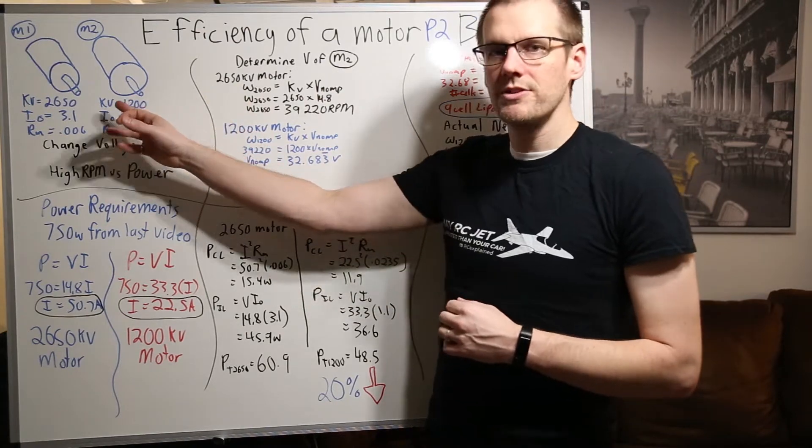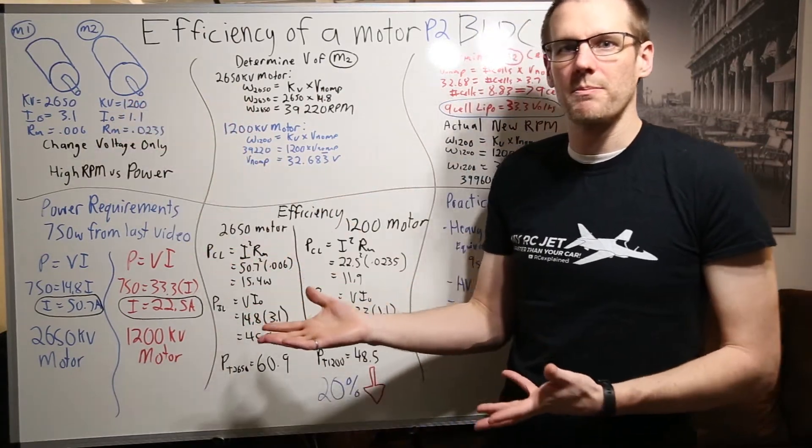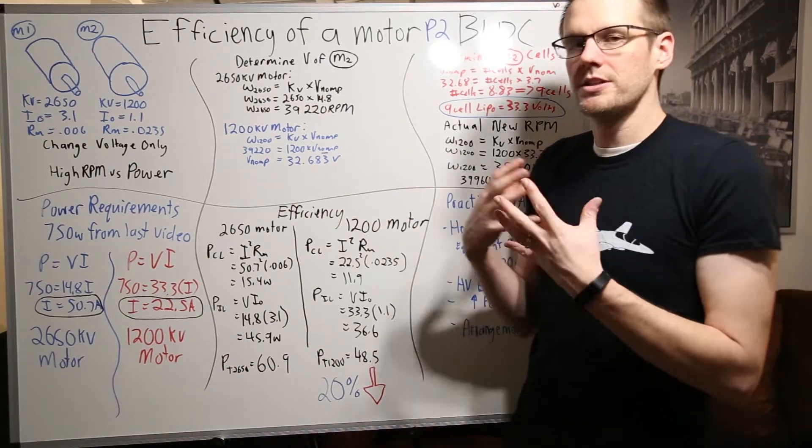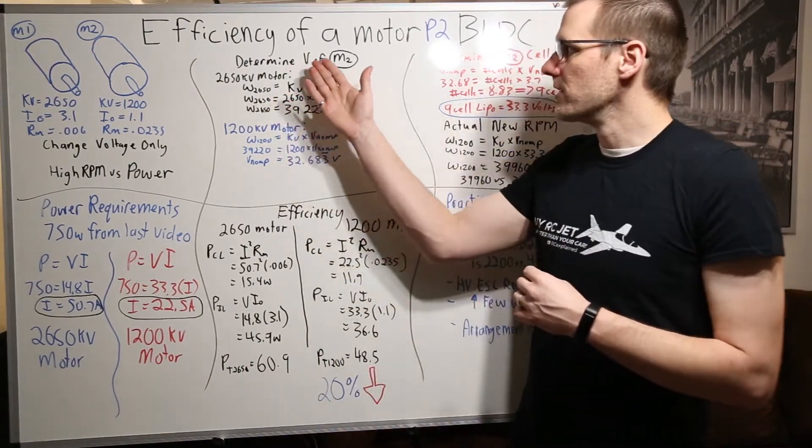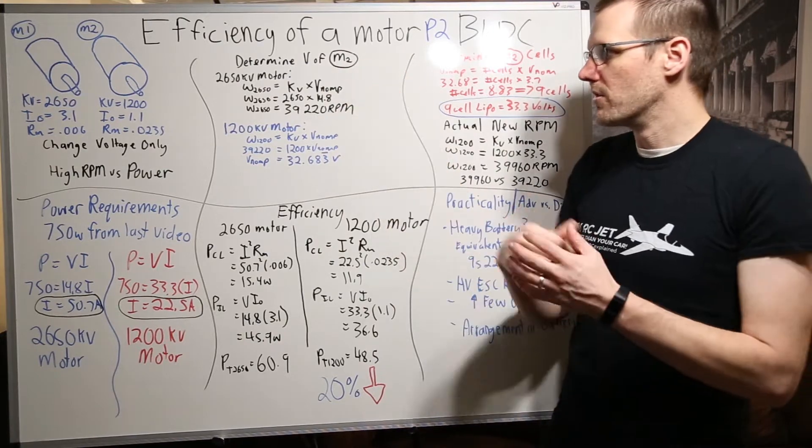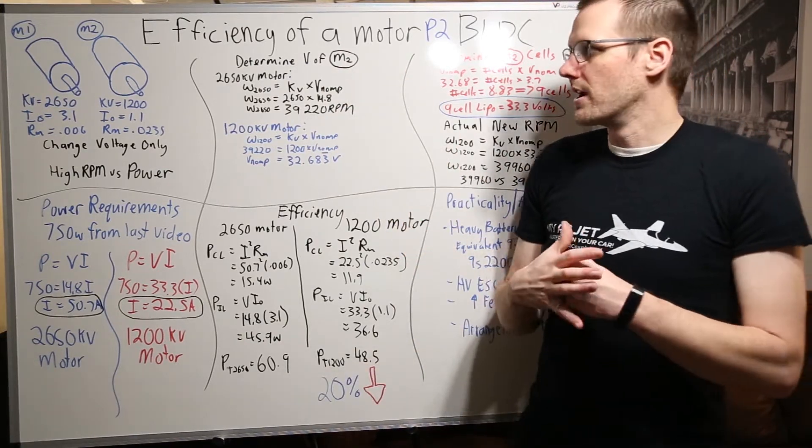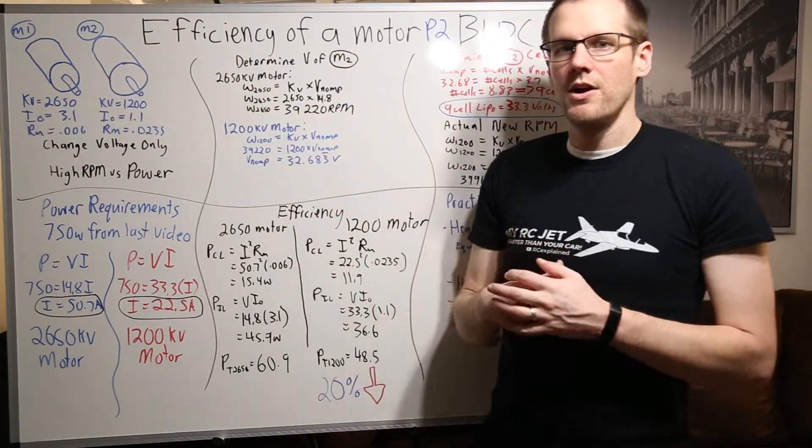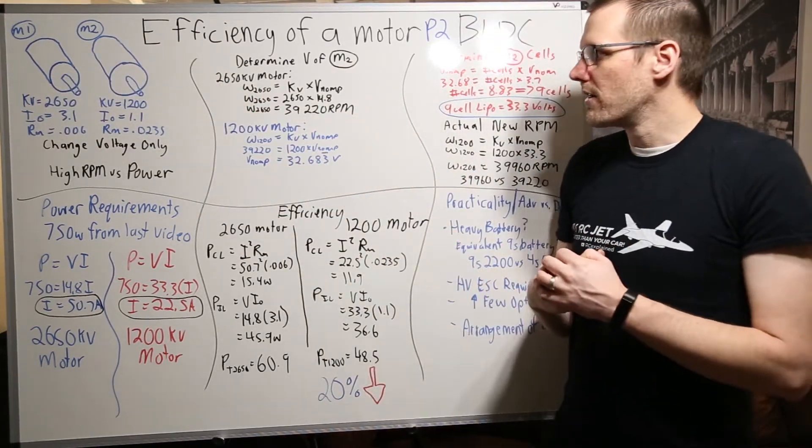What we want to do is because we have the 1200 kV, we want to be able to bump that up and the only way to do that is by using voltage. So let's figure out how we determine the voltage of motor number two. Now the way that we're going to do this here in our first step is we're going to figure out based on the last video what kind of RPM we get out of our first motor.